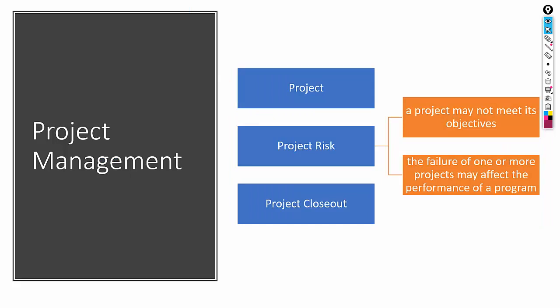Next is project management. There are several risks associated with project management. A project is a time-bound activity with a start and end date, whereas a program is continuous. Project risks include failing to meet defined objectives, or the failure of one project affecting others. Controls to mitigate these include implementing a change control board to prevent scope creep, prioritizing critical project tasks to use resources optimally, and providing additional resources to overcome bottlenecks.